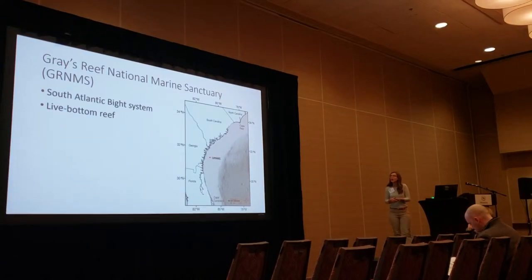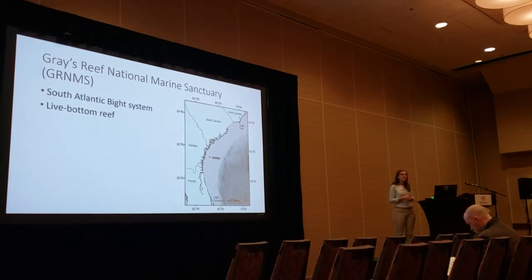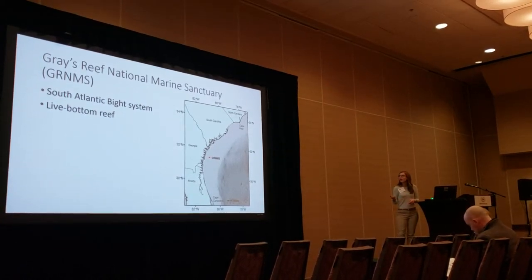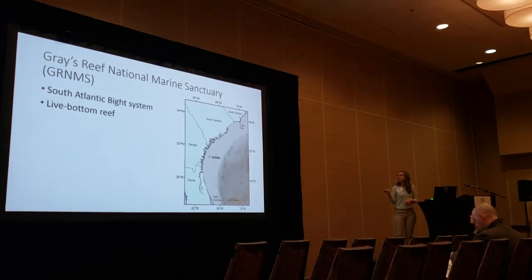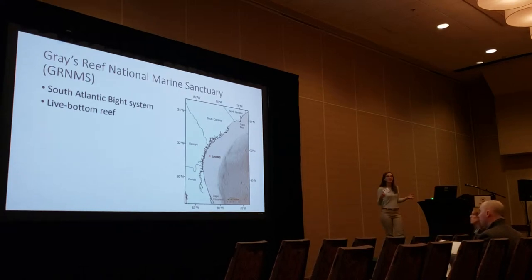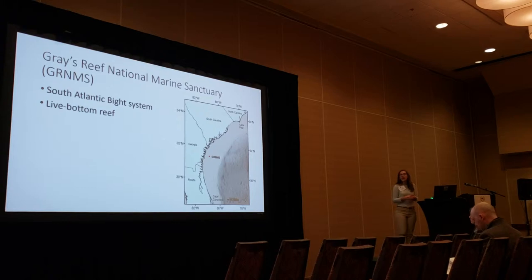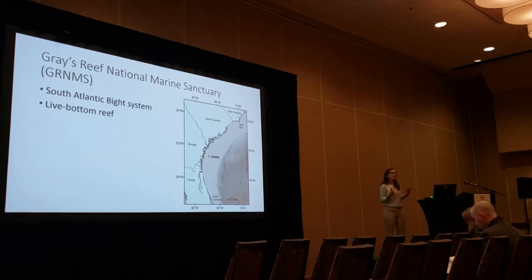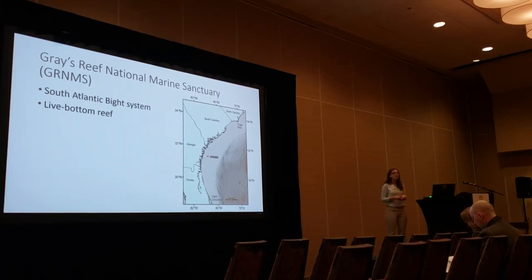That brings us to our specific system at Gray's Reef National Marine Sanctuary. This is a sanctuary found in the South Atlantic Bight system, which ranges from Cape Canaveral in Florida all the way up to Cape Fear in North Carolina. This system is characterized by a very long continental shelf that extends far off the coast, and it is dominated by soft sediment temperatures — it's a pretty soft system. Gray's Reef, specifically, is a rocky outcrop region.